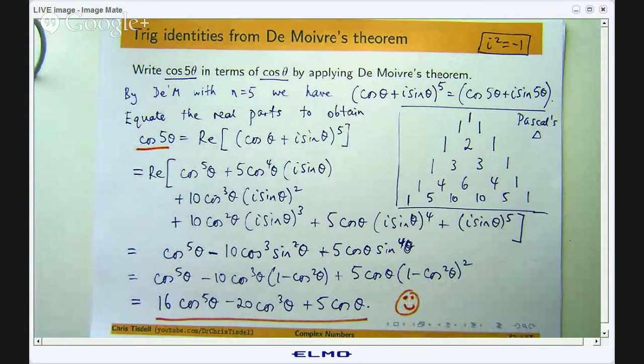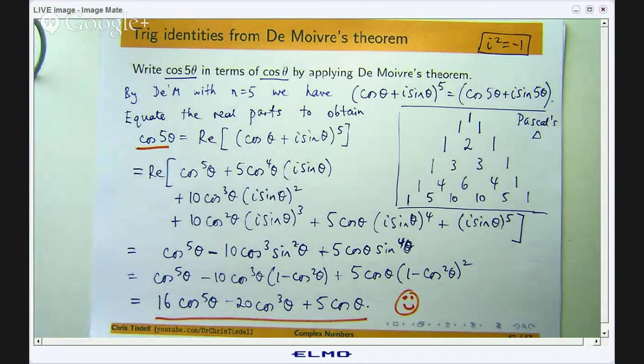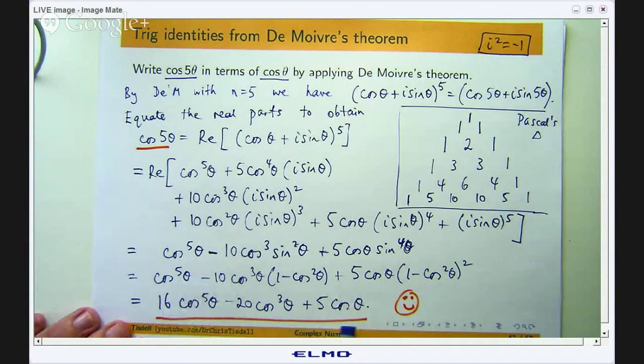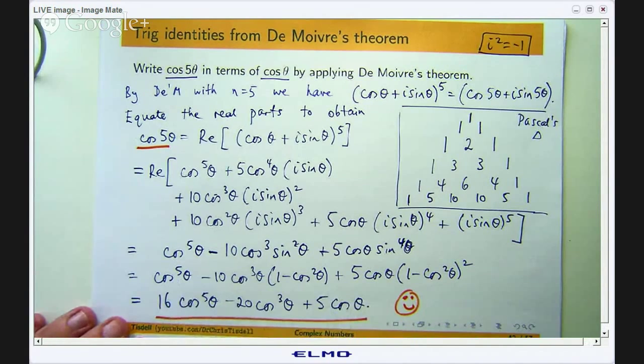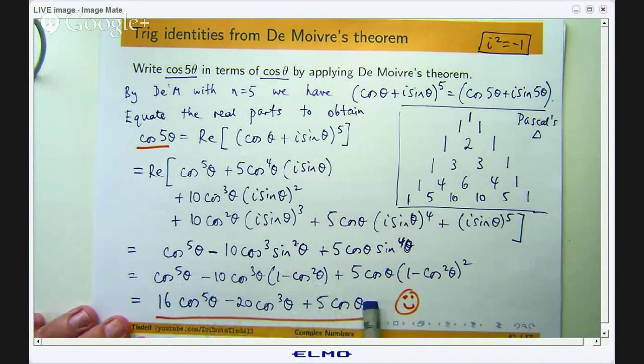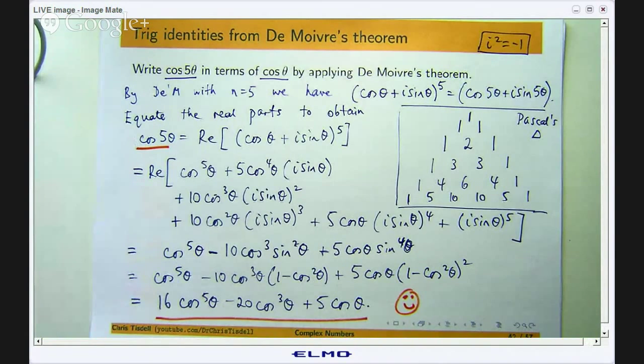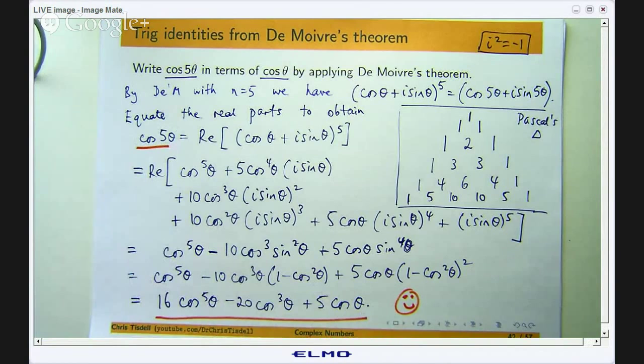Now, a good question is why would I want to do that? Why would I want to write this as this? Well, one potential application, at least to save you time, is when you are integrating trig expressions. Let us say you wanted to integrate this. To integrate this is not short because you have got these powers here. But if you are going to write this as cos 5θ, it is easy to integrate cos 5θ with respect to theta. It will be something like 1 on 5 sin 5θ. So although we have gone from simple to complicated here, if you wanted to integrate this, you would go back to here and you would just do the integration in one step.